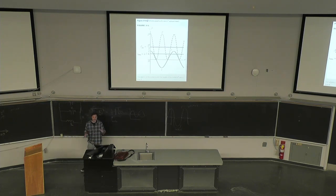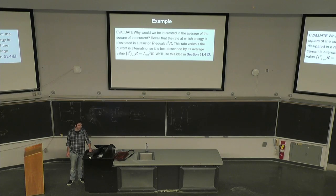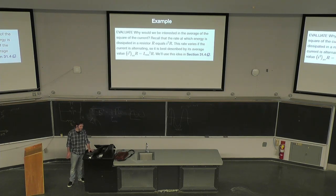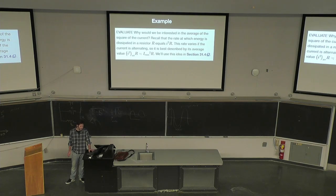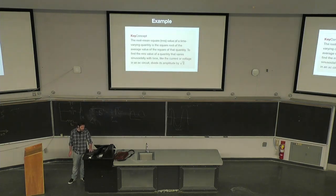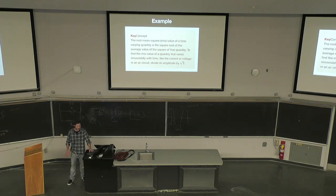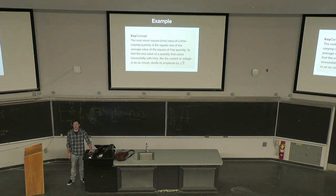Why are we interested in the average of the square of the current? Recall that the rate at which energy is dissipated in resistance R equals I-squared times R. This rate varies if the current is alternating, so it's best described by the average value I-squared-average times R, which equals IRMS-squared times R. To find the RMS value of a sinusoidally varying quantity, just divide its amplitude by root 2.